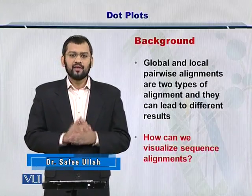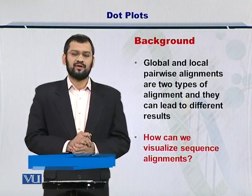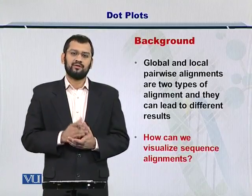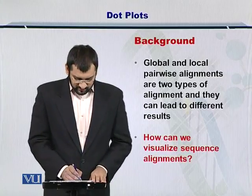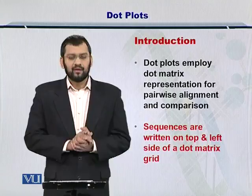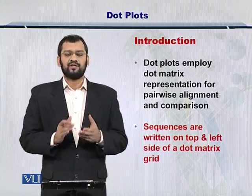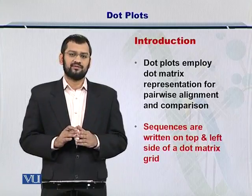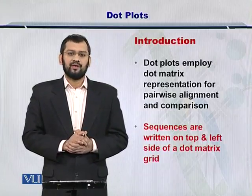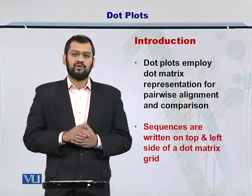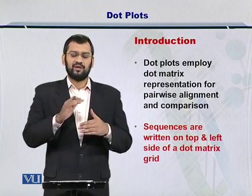How do we start this process, and how can we visualize it? Dot plots are one tool to do that. I will introduce you to these very interesting techniques, but first let me define them for you. Dot plots are essentially dot matrix representations with the sequences written on top and on the left side of the matrix. This helps you to find out which specific nucleotides or amino acids are matching between the two sequences.